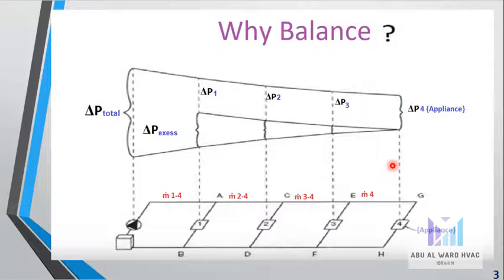In the furthest unit we will get the minimum delta P and the minimum flow. The delta P is reduced in delta P2 and delta P3 until we reach the furthest unit which has the least delta P.